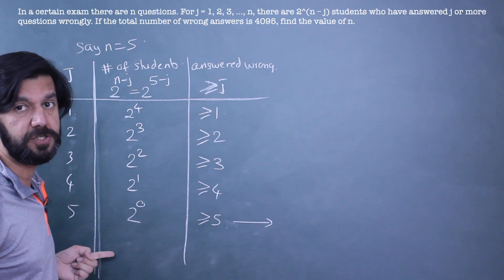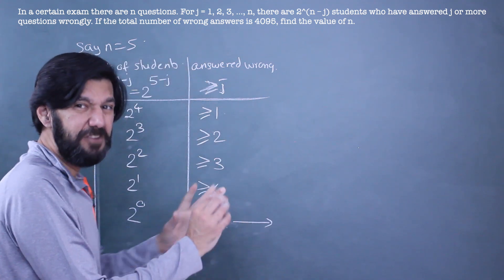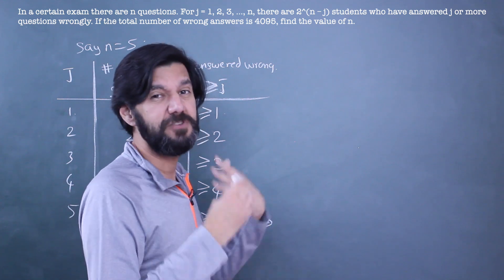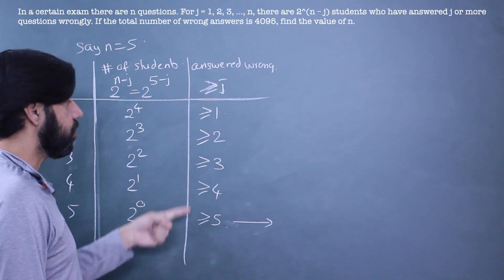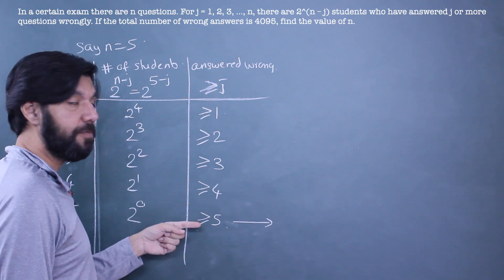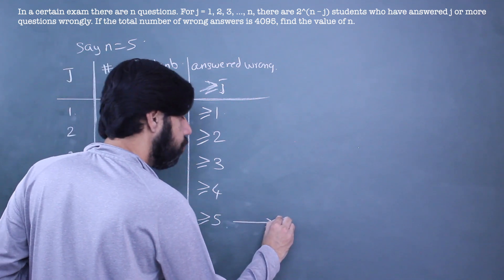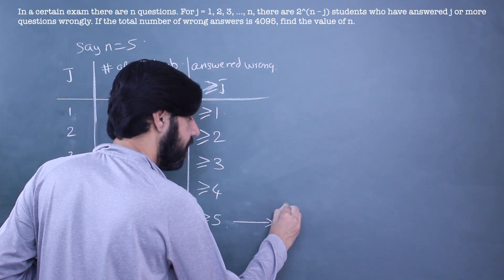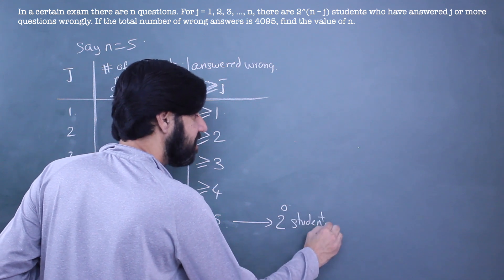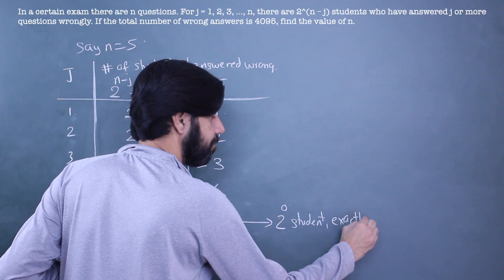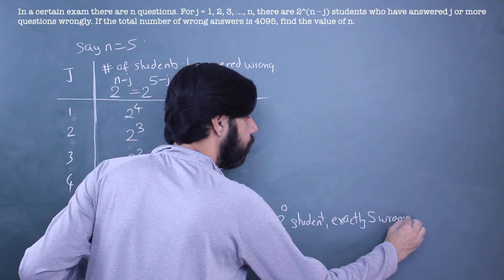You could convert them into numbers also, but if you want to see the pattern of what's happening, which will make the question a little tougher but which will also help you learn quite a bit. So now our focus is on 5 or more than 5 questions. Can I say this is just 2^0 students, mind you - these students have answered exactly 5 wrong because there aren't more than 5.